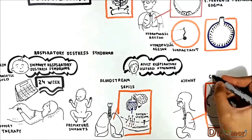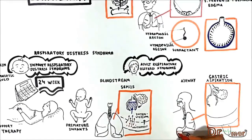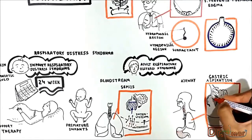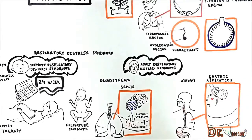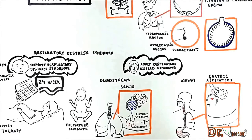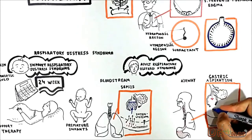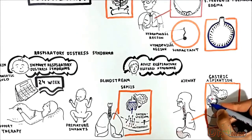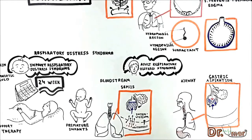In the case of gastric aspiration, there is a direct injury to the alveolar epithelium via the airway, causing increased permeability of the alveolar membrane. As such, interstitial proteins enter the alveolus and carry water with them, resulting in pulmonary edema.